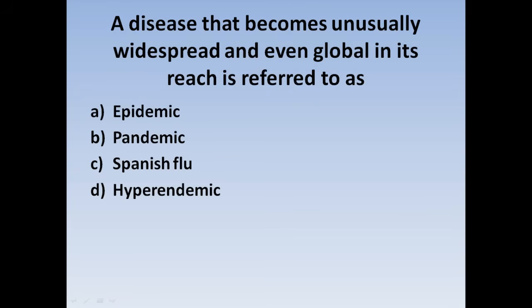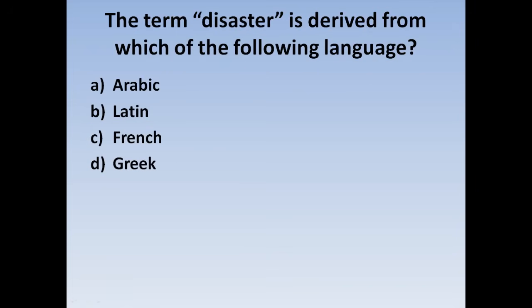Next question: A disease that becomes unusually widespread and even global in its reach is referred to as — Option A: Epidemic, Option B: Pandemic, Option C: Spanish flu, Option D: Hyperendemic. When a disease spreads at a global level, it is called a pandemic. Correct answer: Option B, Pandemic.